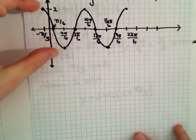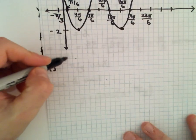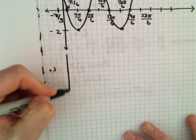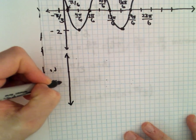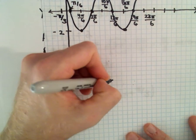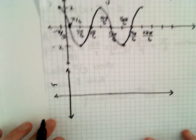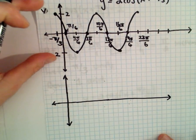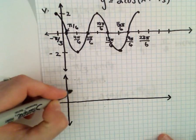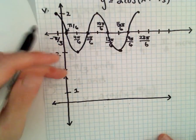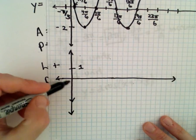So now what I'm going to do is take this graph and shift it down 1 unit. Moving everything down 1 unit means instead of going from negative 2 to positive 2, I'm now going up to a height of positive 1 but bottoming out at negative 3. So let me give myself a little more room there.